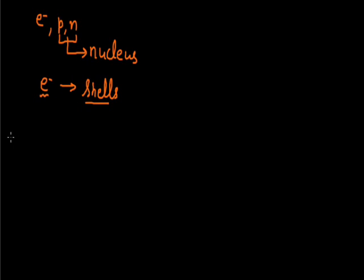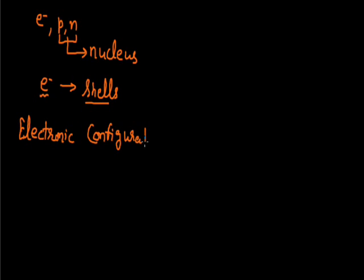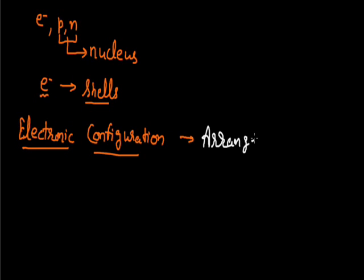This arrangement is studied under the category known as electronic configuration. Electronic configuration is defined as the arrangement of electrons in an atom.